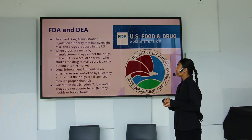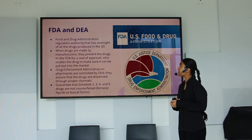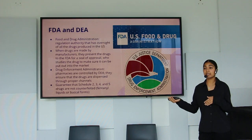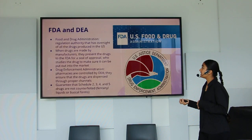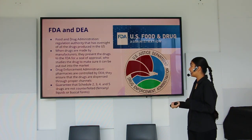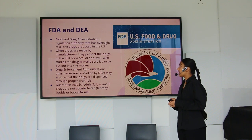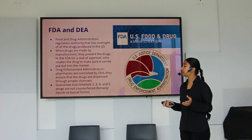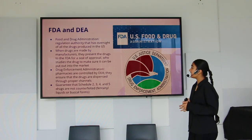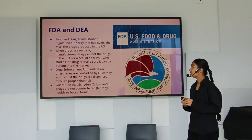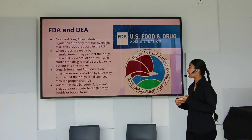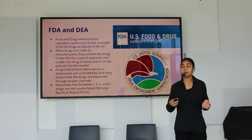The FDA (Food and Drug Administration) is the regulatory authority overseeing all drugs produced in the U.S. Manufacturers must present drugs to the FDA for approval before they reach the market. The DEA (Drug Enforcement Administration) controls pharmacies like CVS, Rite Aid, and Walgreens, ensuring drugs are dispensed through proper channels and that Schedule 2, 3, 4, and 5 drugs are not counterfeited — for example, preventing fentanyl from being sold in liquid or pill forms.